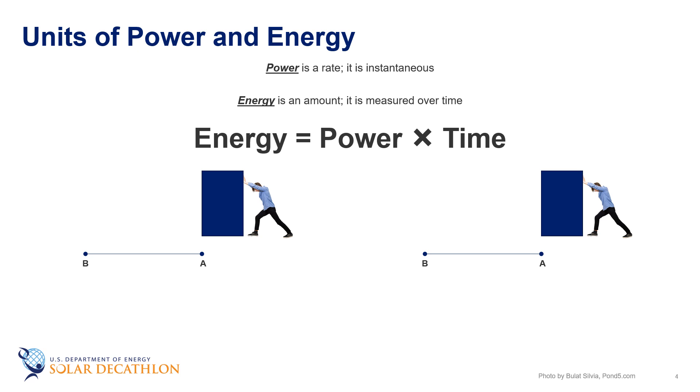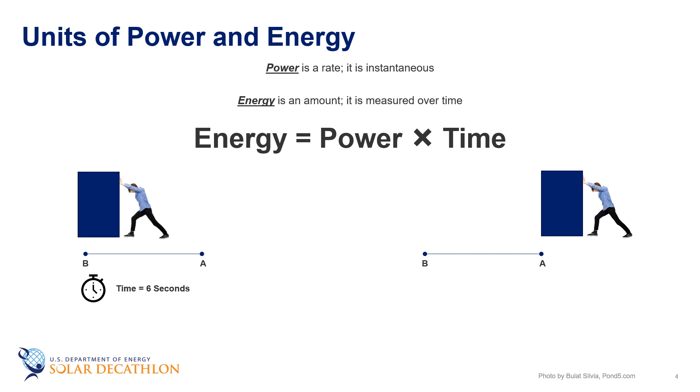Power is a rate, it is instantaneous. Energy on the other hand is an amount. It is measured over time. Energy is the ability to create a change like moving an object over a certain distance. It doesn't matter how fast this action happens. The amount of energy used to move a certain mass over a certain distance is a fixed quantity. Power then is how fast energy is used.